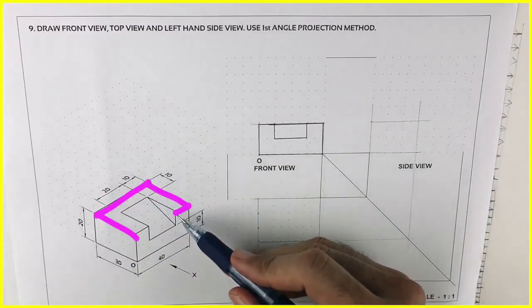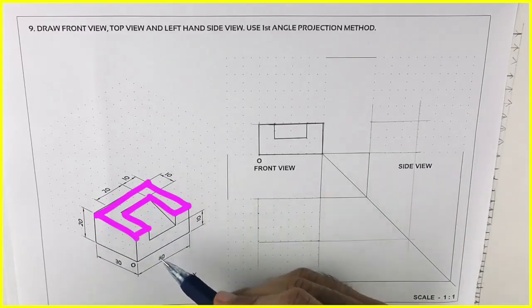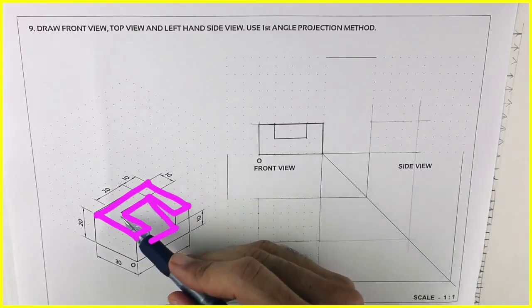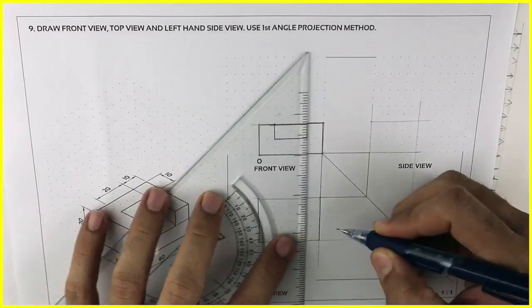Now in top view you can see this inverted U-shape and again a rectangle. So we'll project from front view.